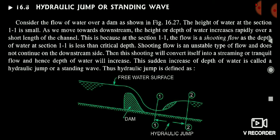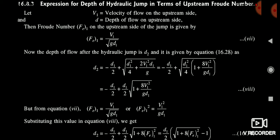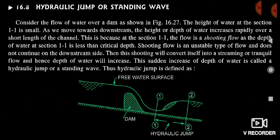Next you can see the hydraulic jump. Whenever water is flowing in an open channel, at some point there is a sudden jump in the water level — that is called our hydraulic jump. There is a sudden rise in the water level during the flow of water in an open channel. Here you can see that at point 1 the water level is low, and at point 2 there is a sudden rise in the water level. This is our hydraulic jump.